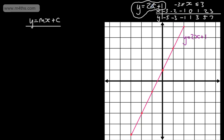Looking closely, the value of 2 gives us the gradient. The gradient is the change in y over the change in x. Picking two points, we can see the line goes up 2 for every 1 it goes across. We say gradient m = 2/1. The number in the numerator is the change in y, over the change in x — that gives us the gradient. Sometimes you'll hear this called rise over run, or delta y over delta x.